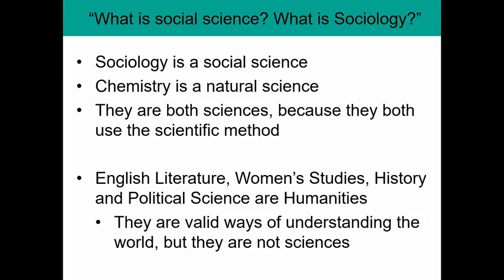Not everything in the world is a science. English literature, women's studies, history, and political science are all humanities. They are valid ways of understanding the social world, but they are not sciences. If something uses the scientific method, it is science. If it doesn't, it is not. In future lectures we'll talk about what exactly the scientific method is — if you've taken a natural science class, you've likely encountered the scientific method before, probably in a chemistry course.